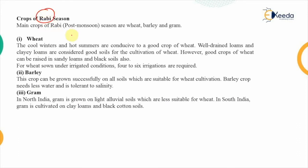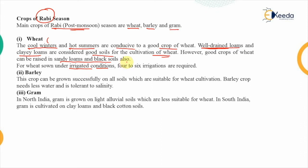The major crops of the Rabi season, grown during the post-monsoon period, are wheat, barley, and gram. Wheat requires cool winters and hot summers, with cultivation from November–December through March. The soil required is well-drained loams or clay loams, though good wheat crops can also be raised on sandy loams and black soils. Under irrigated conditions, the field needs to be irrigated four to six times.